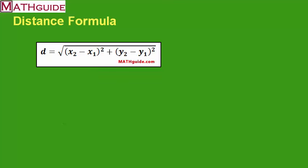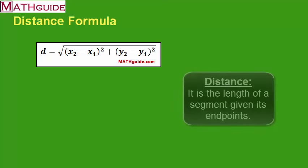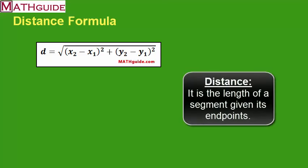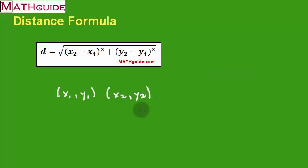Why do we use subscripts? Well, anytime we're trying to find the distance, we're really trying to find the length of a segment given its endpoints. So even though it's not explicitly stated in the formula, we're assuming we're dealing with two points. Our first point would be x1, y1, and the second point would be x2, y2. We use the subscripts so we can see that there is a difference between our first x value and our second x value, and our first y value and our second y value — to distinguish the difference between two points.